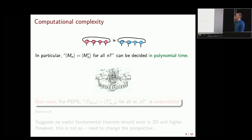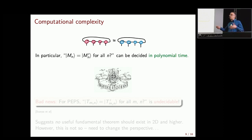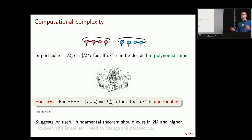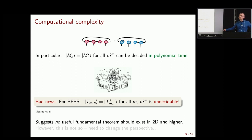One question is whether we can decide, given two tensors M and M-prime, whether they generate the same quantum states for all system sizes. This is a tricky for-all-system-sizes problem, but thanks to the fundamental theorem it reduces to checking if canonical forms can be related, and that can be done efficiently. Now the bad news: for PEPS in higher dimensions, this is an undecidable problem. There is no algorithm that takes two PEPS tensors as input and tells you whether they generate the same many-body state for all system sizes. This suggested there should be no useful fundamental theorem, since such a theorem would give at least some algorithm.